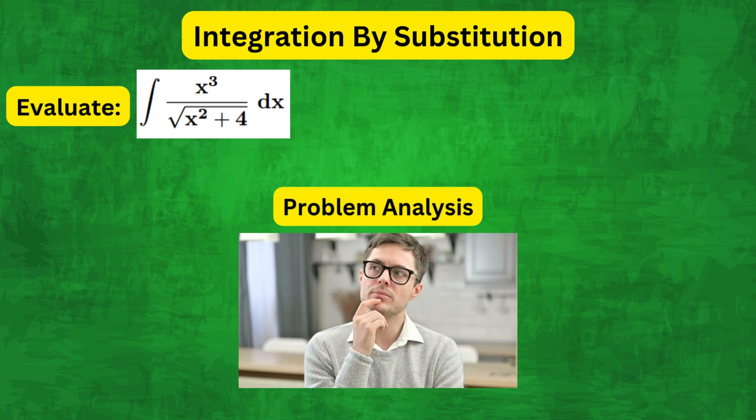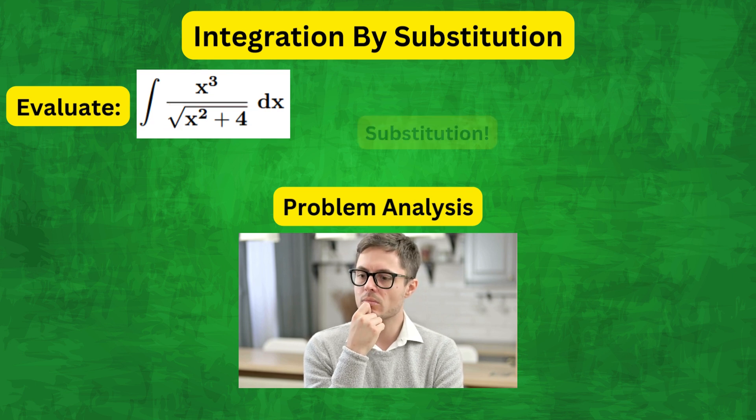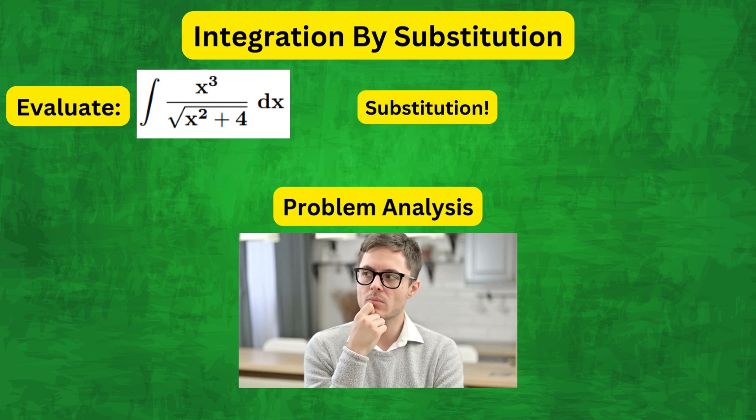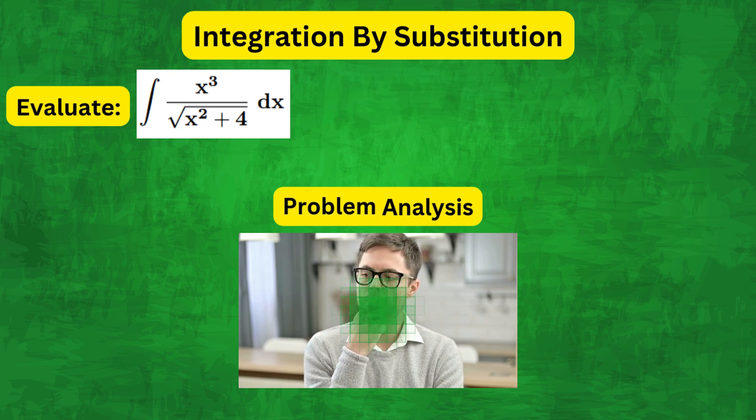The first step is to analyze the problem. Notice that the denominator square root of x squared plus 4 and the numerator x cubed suggest a substitution which might simplify the integral. Additionally, x cubed can be written as x squared times x, which could further lead to simplification after the appropriate substitution.